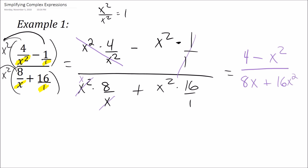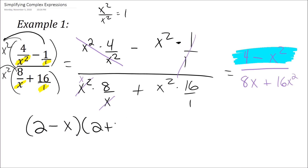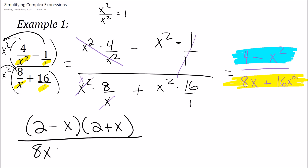Now I want to keep going and simplify this even further by factoring the numerator and denominator. The numerator is 4 minus x squared — that's a difference of two squares, so I can factor it as (2 minus x)(2 plus x). The denominator is 8x plus 16x squared, and I can factor out a GCF of 8x, which leaves me with 8x(1 plus 2x). And that would be the simplified version of this problem.